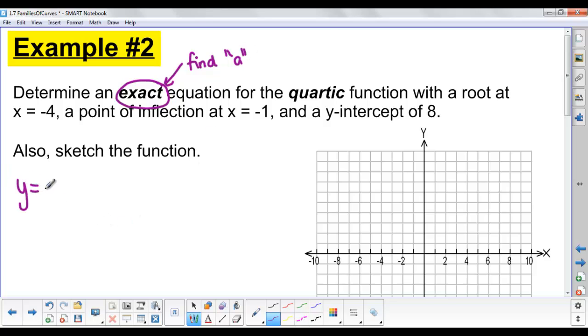Let's set up the general equation. We have y equals a. Then it says we have roots at -4, so x plus 4, just a single root. And we have a point of inflection—remember that is our triple root—which means we need exponent 3 on our bracket. So point of inflection at x equals -1: x plus 1 and then exponent 3.